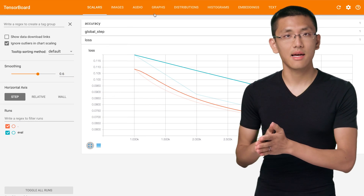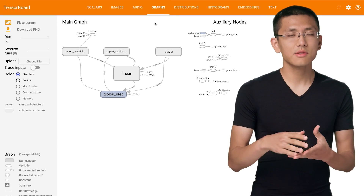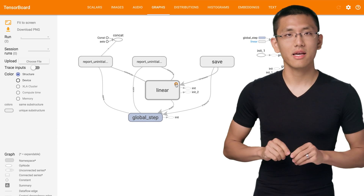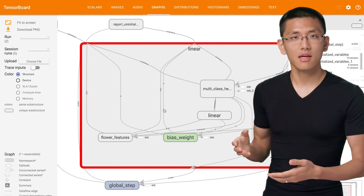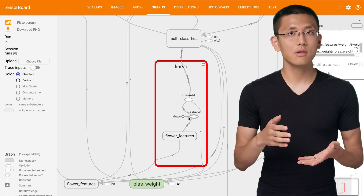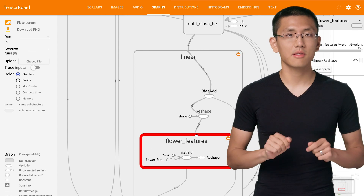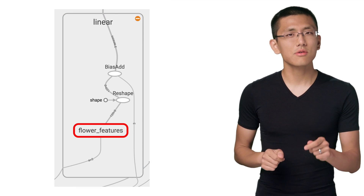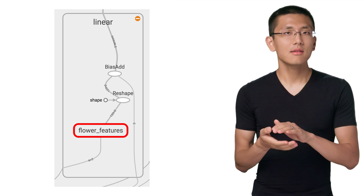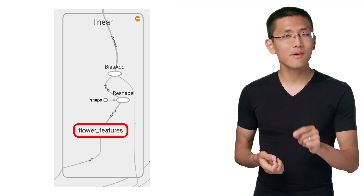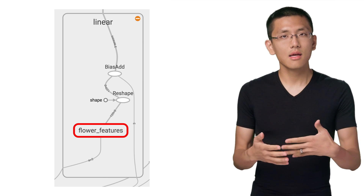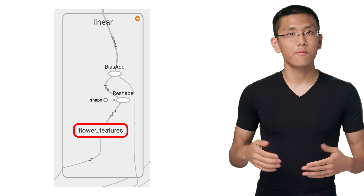Let's go over to the Graphs tab now. Notice that on the surface, the graph is pretty simple. We're able to expand each of these blocks by clicking the plus sign to see more detail. For example, if I expand the linear block, we see that it's made up of a number of subcomponents. And we can scroll to zoom in and out, as well as click and drag to pan and see other parts of the graph. Notice also that the names we gave our feature columns, like flower features, show up as named graph components. This can help with debugging and identifying how the graph is all hooked up. Most of TensorFlow's operations can be named, so that's a great way to clarify your models and see what's going on.